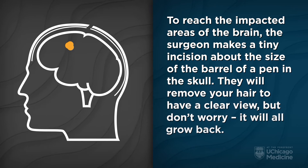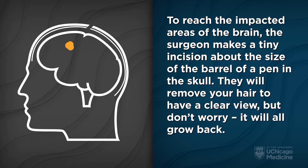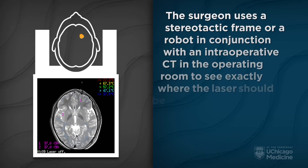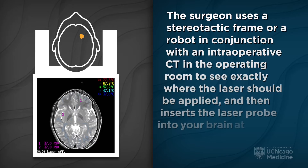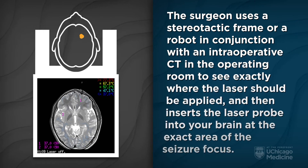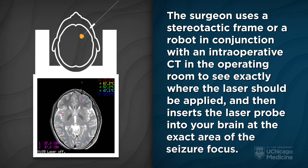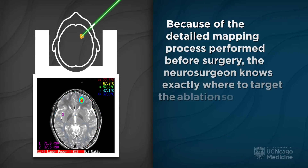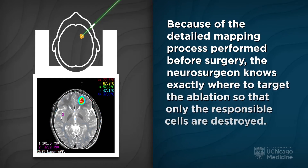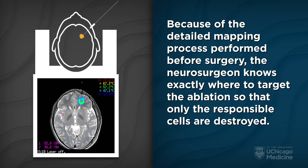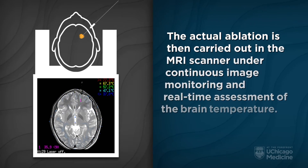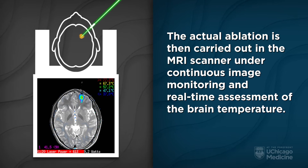They will remove your hair to have a clear view, but don't worry — it will all grow back. The surgeon uses a stereotactic frame or a robot in conjunction with an intraoperative CT in the operating room to see exactly where the laser should be applied, then inserts the laser probe into your brain at the exact area of the seizure focus. Because of the detailed mapping process performed before surgery, the neurosurgeon knows exactly where to target the ablation so that only the responsible cells are destroyed. The actual ablation is then carried out in the MRI scanner under continuous image monitoring and real-time assessment of the brain temperature.